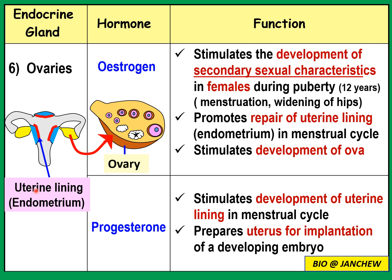The sixth endocrine gland is the ovaries, found on both sides of the uterus. The ovary is a reproductive organ that produces the female gamete (ovum), but it is also an endocrine gland because it secretes estrogen and progesterone — the two female sex hormones. Estrogen stimulates the development of secondary sexual characteristics in females during puberty, around age 12. It also causes the start of menstruation (monthly bleeding) and other characteristics such as widening of the hips and accumulation of fat in certain parts of the body.